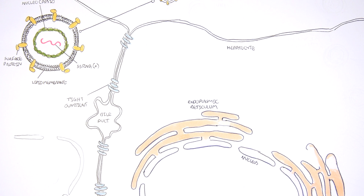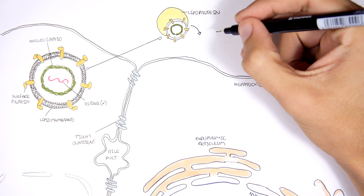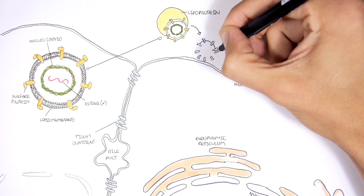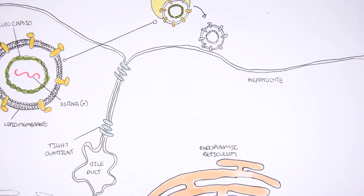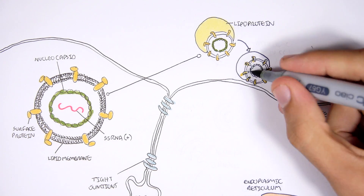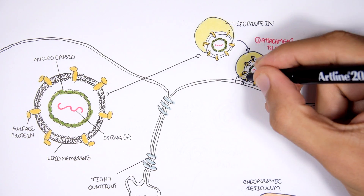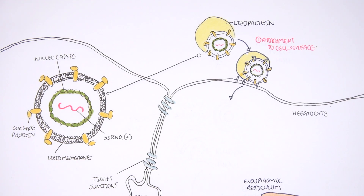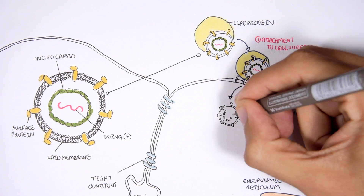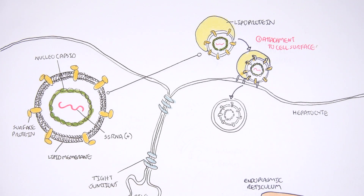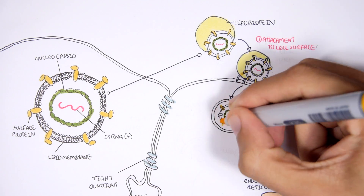Now that we know the cell that the hepatitis C virus will invade, let's see how the virus invades the hepatocyte and how it replicates within it. The hepatitis C virus is bound to the lipoprotein. The lipoprotein and the hepatitis C virus will bind onto specific receptors on the liver cell — a process called attachment — which will lead to viral entry. The liver cell will endocytize the hepatitis C virus, and an endosome will form containing the virus.